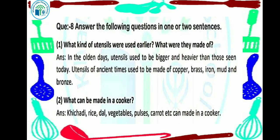First question: what kind of utensils were used earlier and what were they made of? In the olden days, utensils used to be bigger and heavier than those seen today. Utensils of ancient times used to be made of copper, brass, iron, mud and bronze.